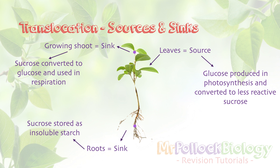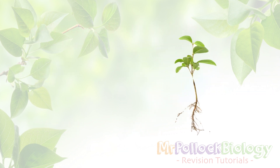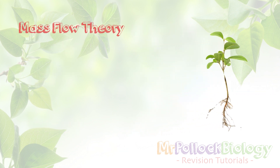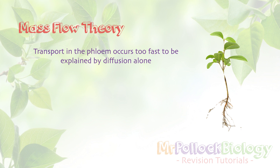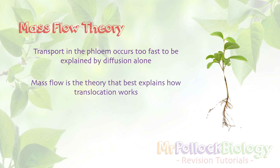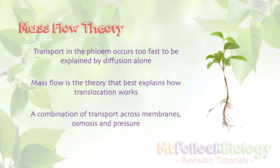For your spec, you only need to know that the leaves are the source and there are two possible sinks. However, in certain situations — if the plant isn't photosynthesizing enough — this whole system can reverse. This is another difference compared to the xylem: the phloem can transport substances in both directions. The theory we use to explain this whole thing is called mass flow theory. Transport occurs far too quickly to be explained by standard diffusion, so instead we use mass flow, which involves transport across membranes, osmosis, and changes in pressure.